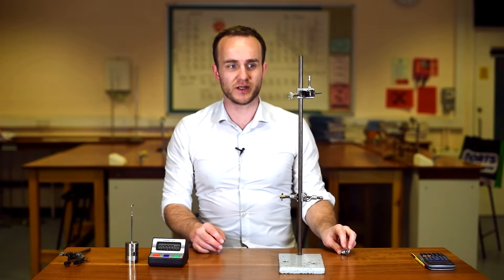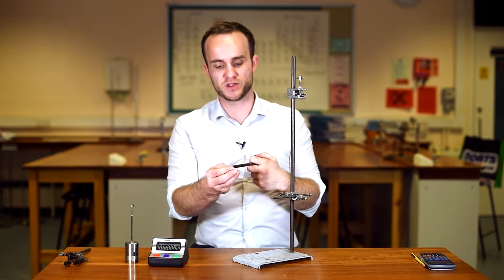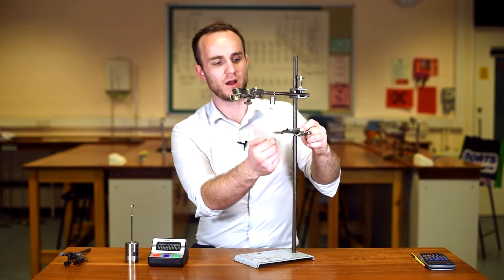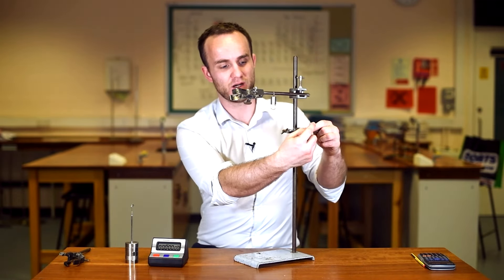The mass-spring system is very similar. All we have to do is get a spring, and what we can do is trap it on the arm of a clamp, and we're going to have a nail as a fiducial marker as per usual.